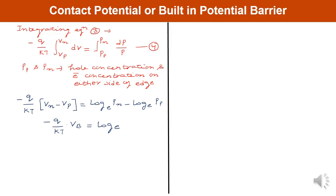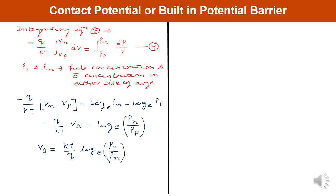Absorbing the minus sign, vb = (kT/q)·ln(pp/pn). This is equation 5. Here pp and pn are the hole concentrations at the edges of the transition region on either side of the junction.